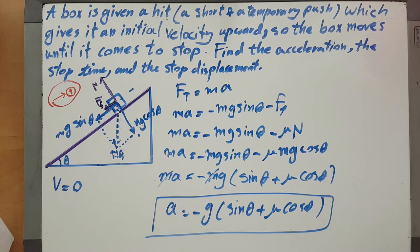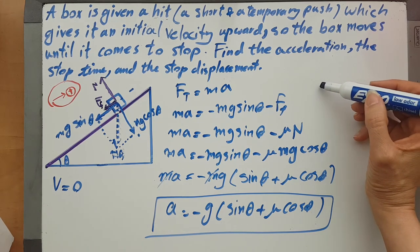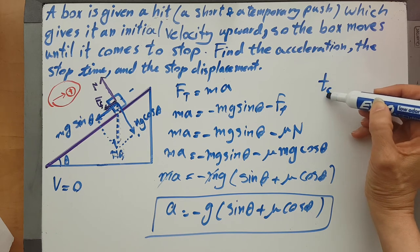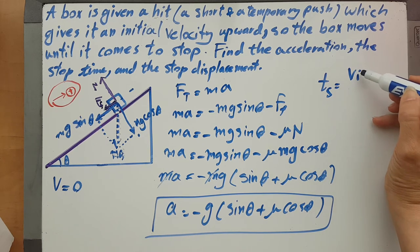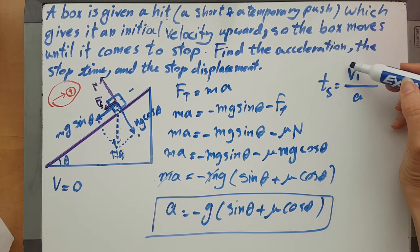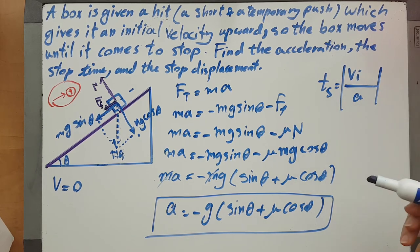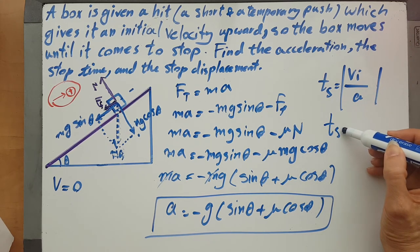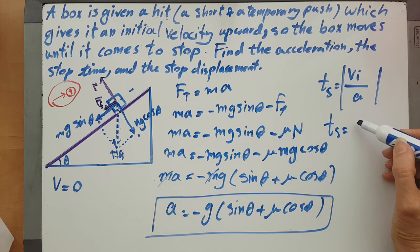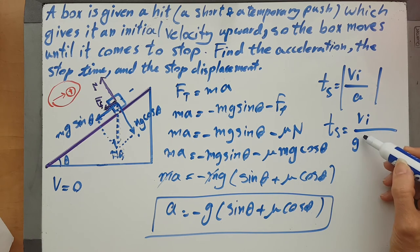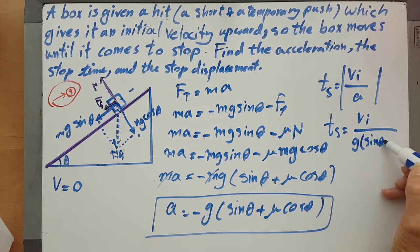And if you look at the previous video, you would know that the stop time would be v initial over a. So, of course, and the absolute value of it, as you might remember, the ts would be vi over g sine theta plus mu cosine theta.